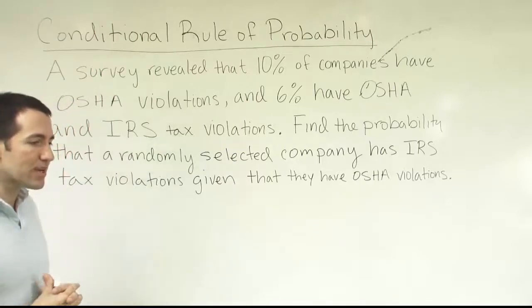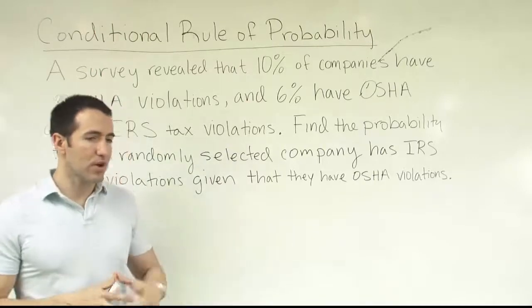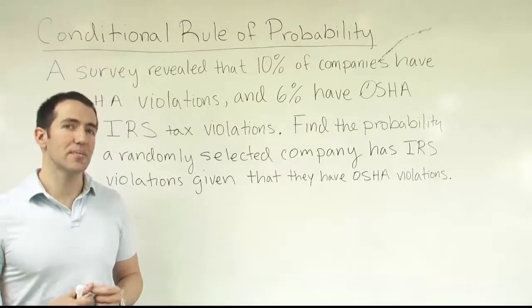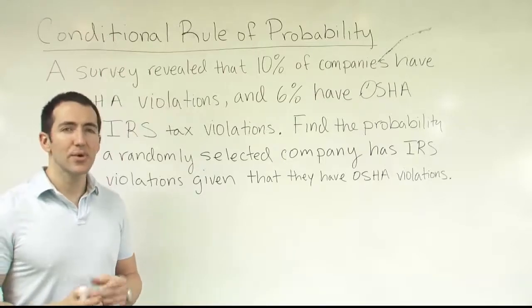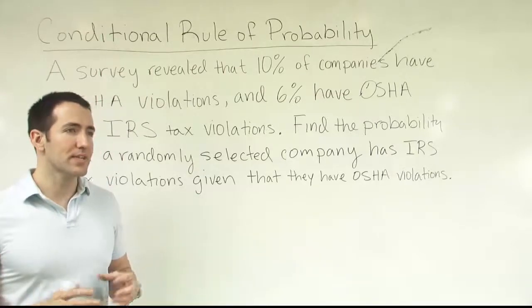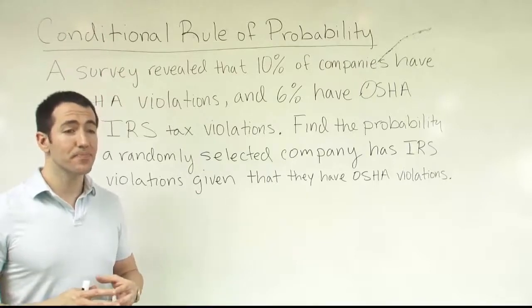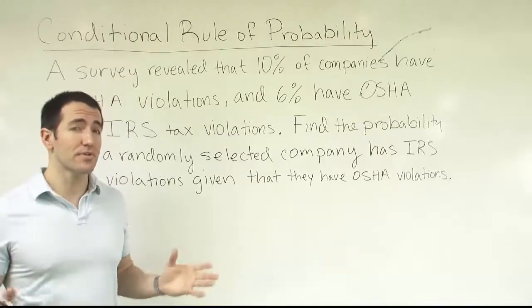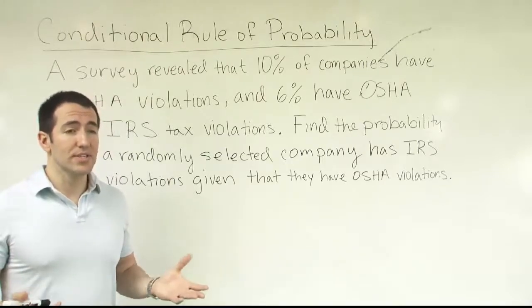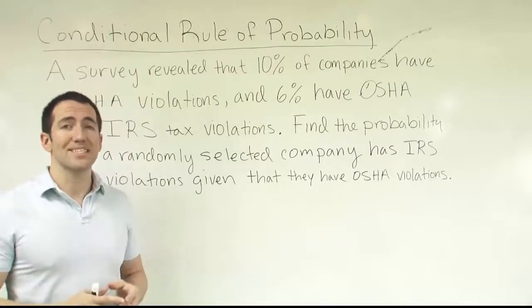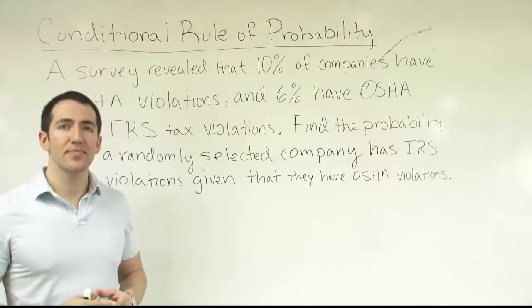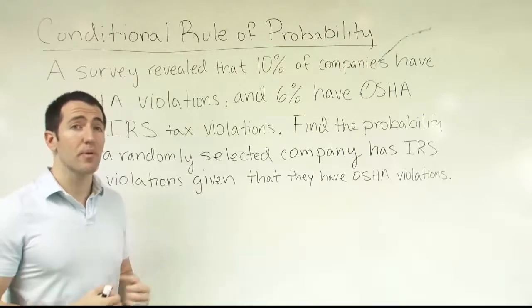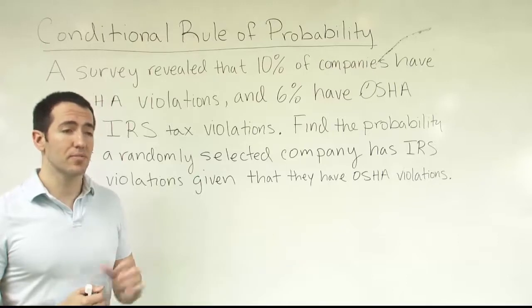Take this example: if you were in a class and you randomly picked a face in the room and asked the probability that person gets an A in the class. Let's say the professor tends to give about 10% of students an A. Without any other knowledge, you'd have to say the probability that person gets an A is about 10%, because that's true of everyone in the class.